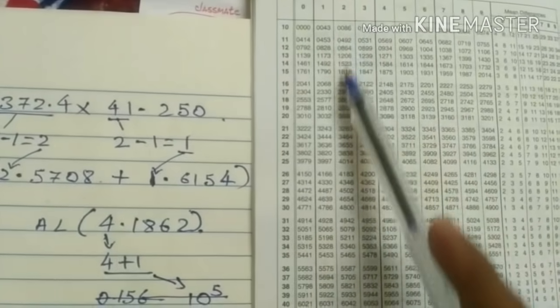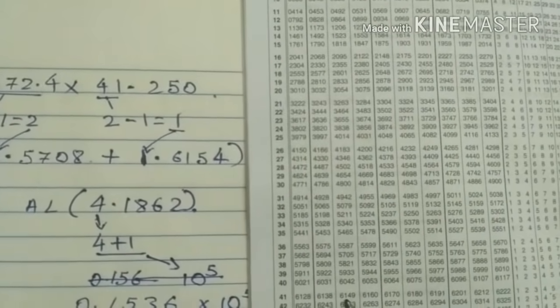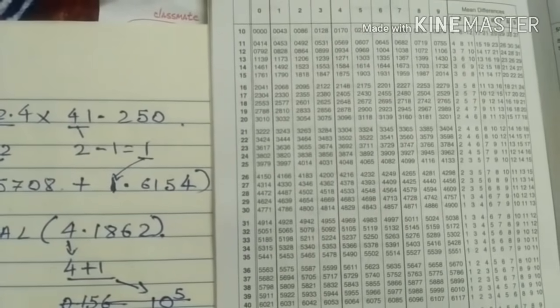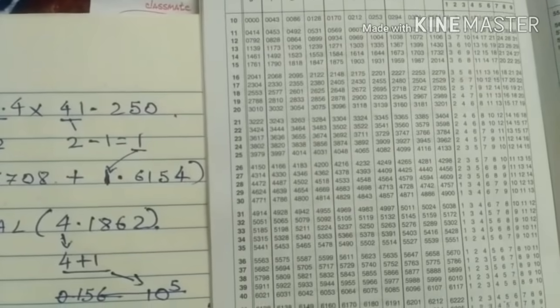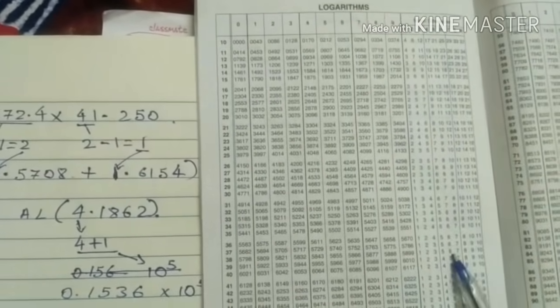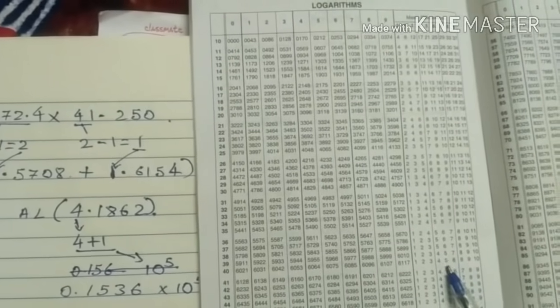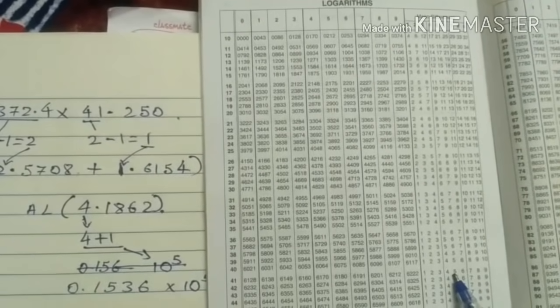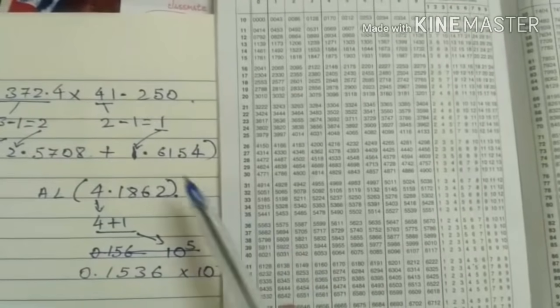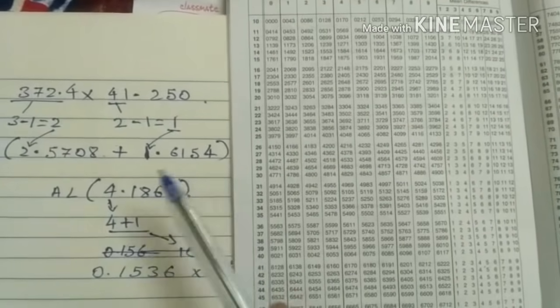Second one. Second table. 41. Second. Here 6, 1, 4, 9. After that we have to see in mean difference. Fifth one. Fifth one. In fifth one it is given. In fifth one it will see. It is given. How much? 5. So we have to add this 5. In 6, 1, 4, 9. So we will get 6, 1, 5, 4. Okay.